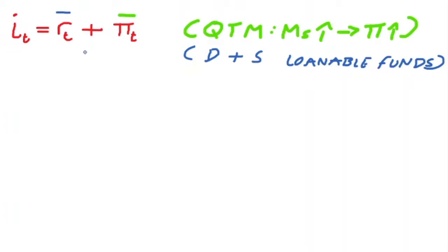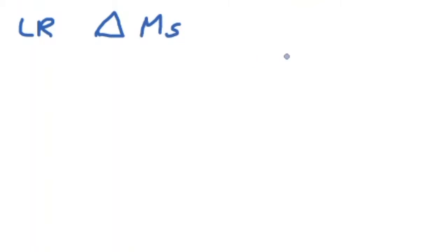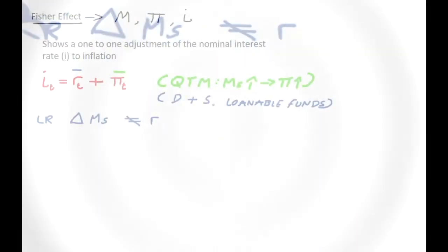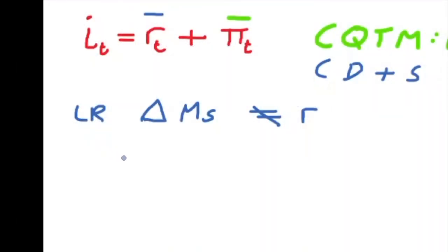This means that if the real interest rate is determined independently and doesn't tend to change, then any increase in the inflation rate due to money supply causes an increase in the interest rate. In the long run, changes in money supply have no impact on the real interest rate — this is called money neutrality. Changes in money supply don't impact the real interest rate; instead, it's determined by the loanable funds market.